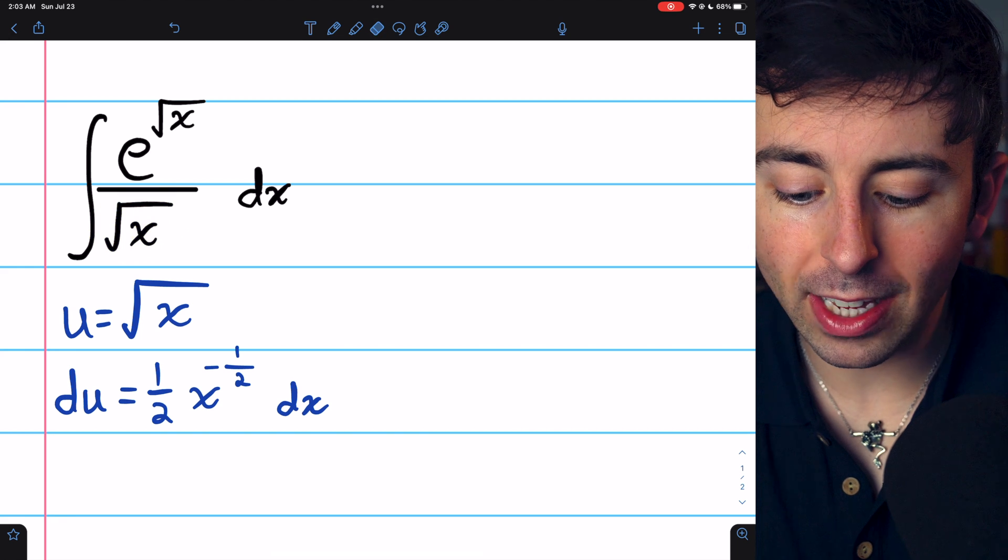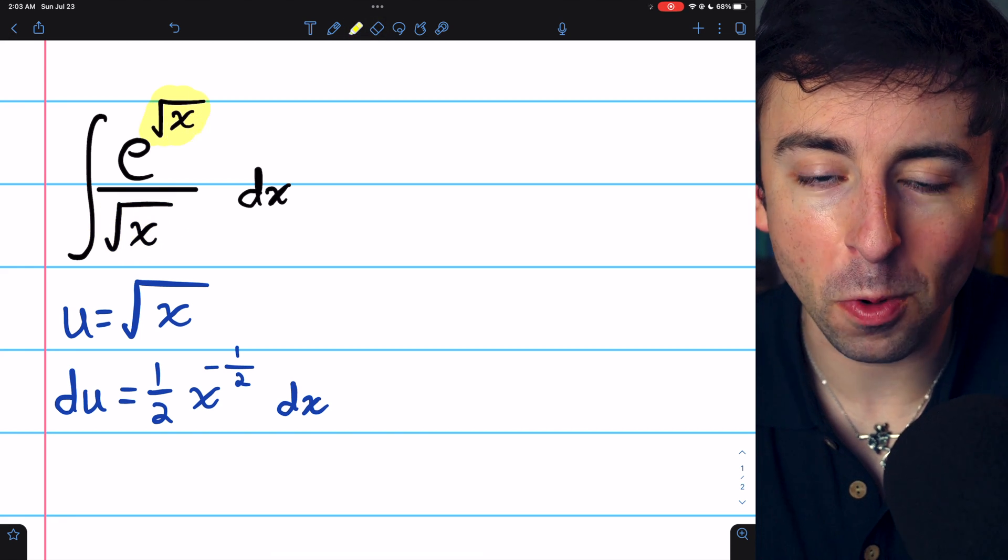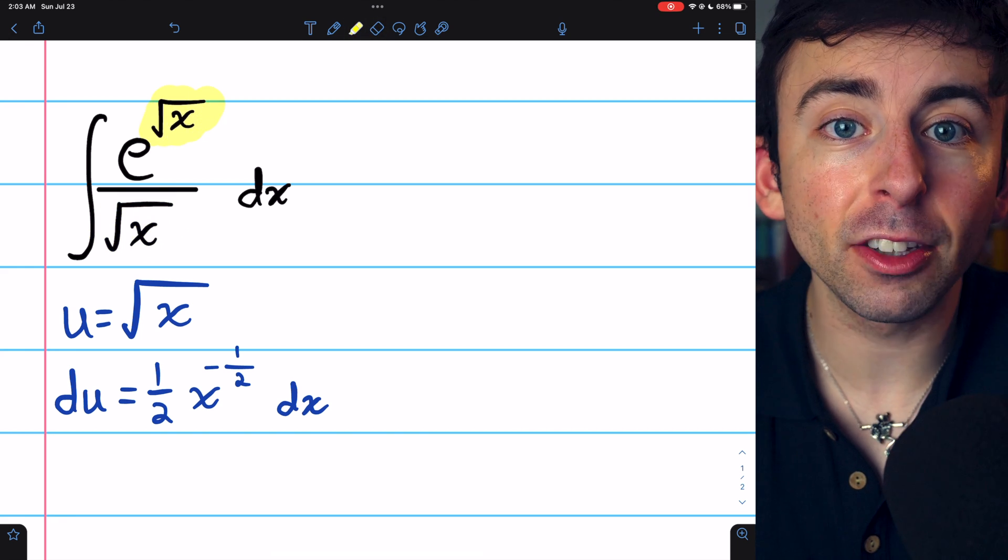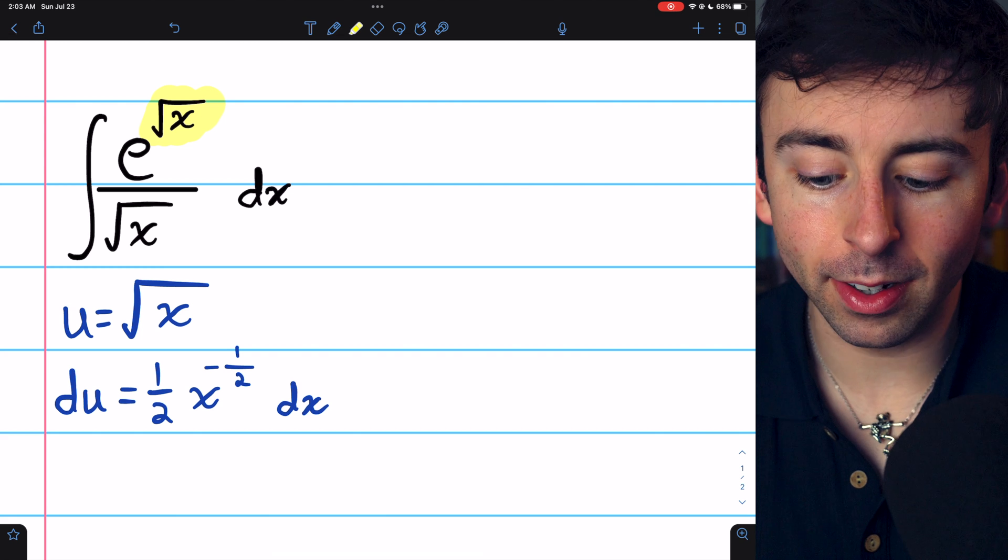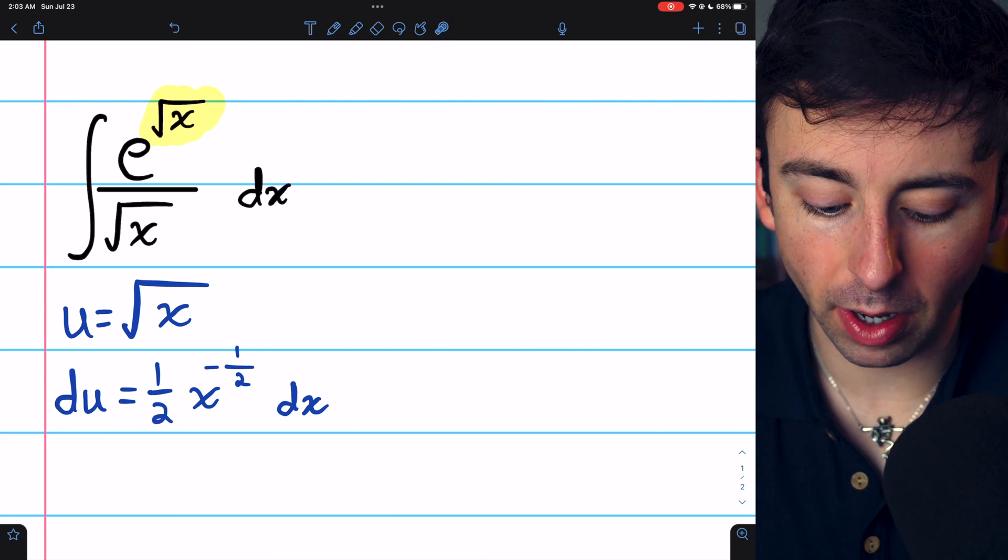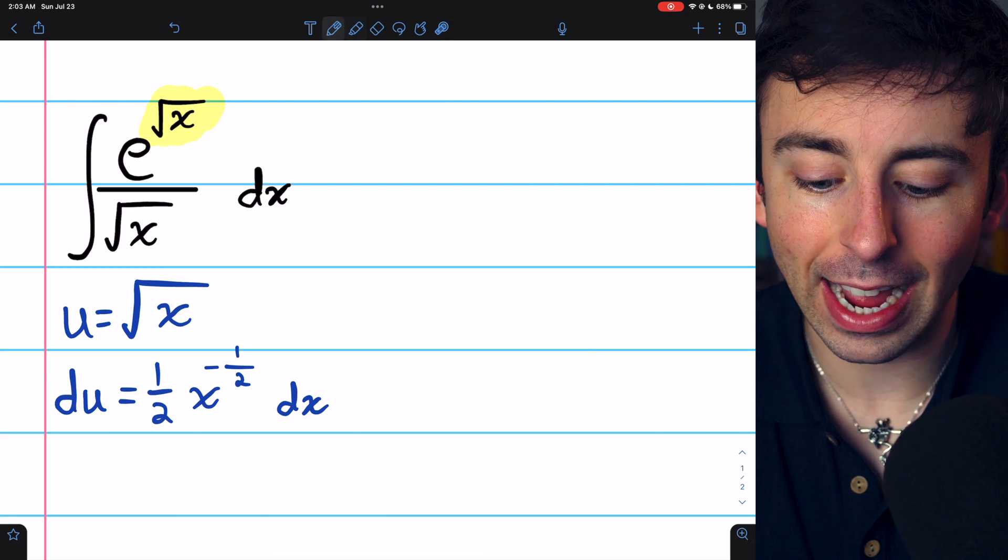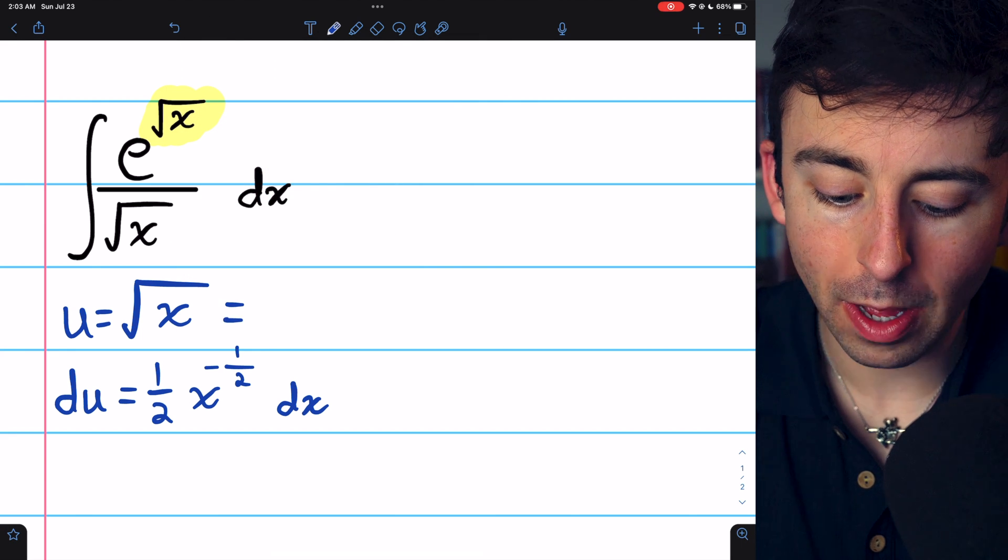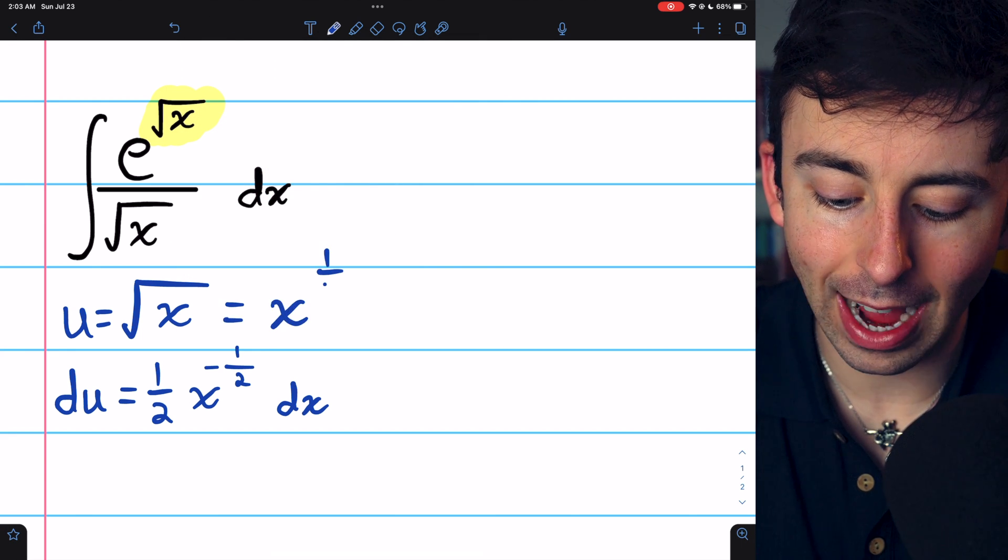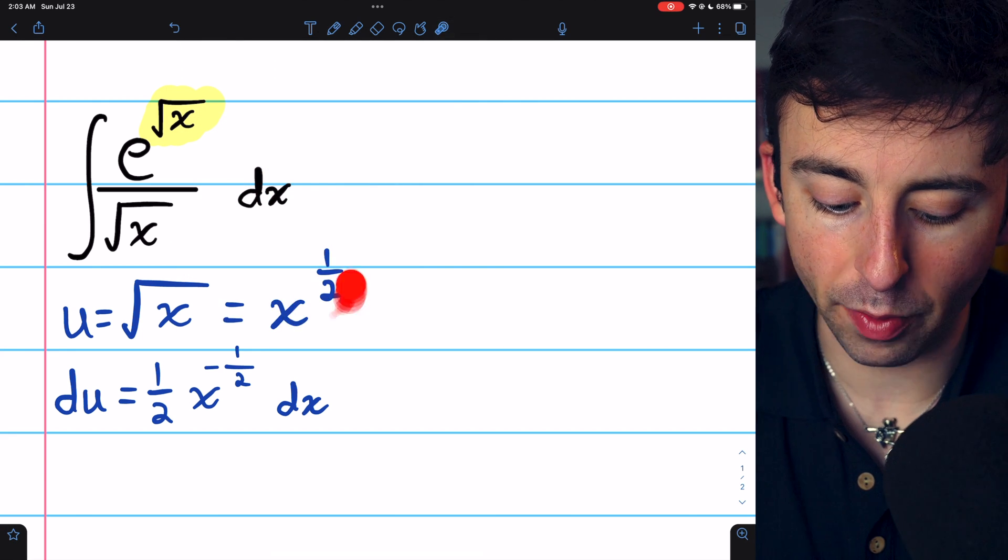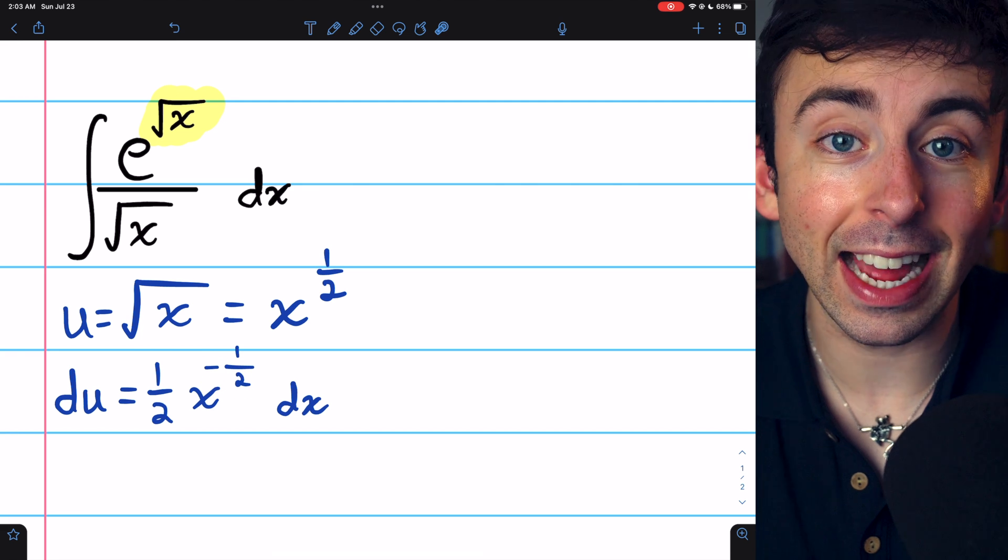However, let's say we let u equal this square root of x, the one that's in the exponent of e. Then, again, the derivative would give us one-half x to the negative half. That's just applying the power rule, because the square root of x is x to the one-half, so the derivative is one-half x to the negative half.